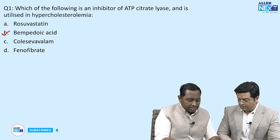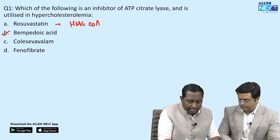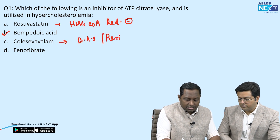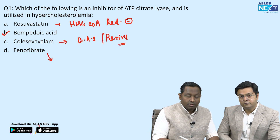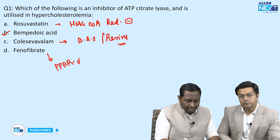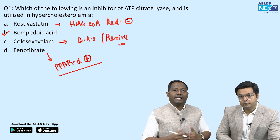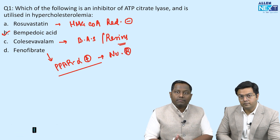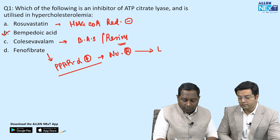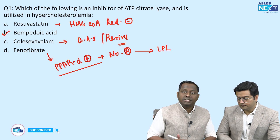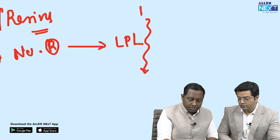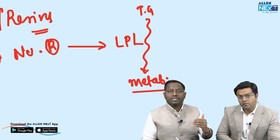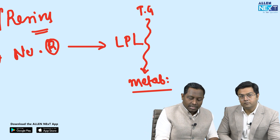The other options: rosuvastatin is an HMG-CoA reductase inhibitor. Colesevelam is a bile acid sequestrant — a resin that chelates bile acid. Fenofibrate is a fibrate and a PPAR-alpha agonist. PPAR stands for peroxisome proliferator activated receptor. As a PPAR-alpha agonist, it acts via a nuclear receptor causing transcription of genes that increase lipoprotein lipase formation, leading to triglyceride breakdown.